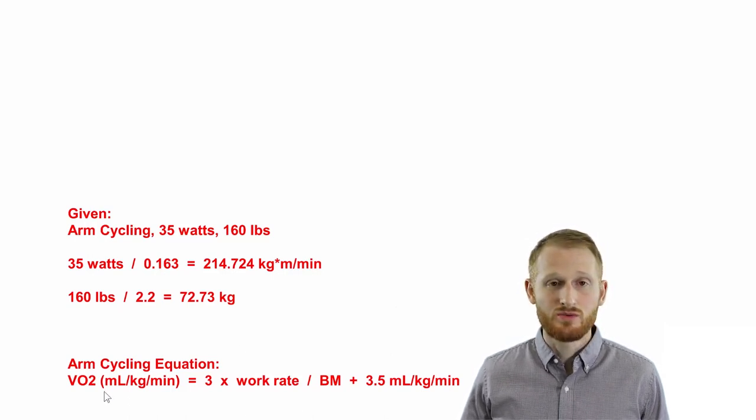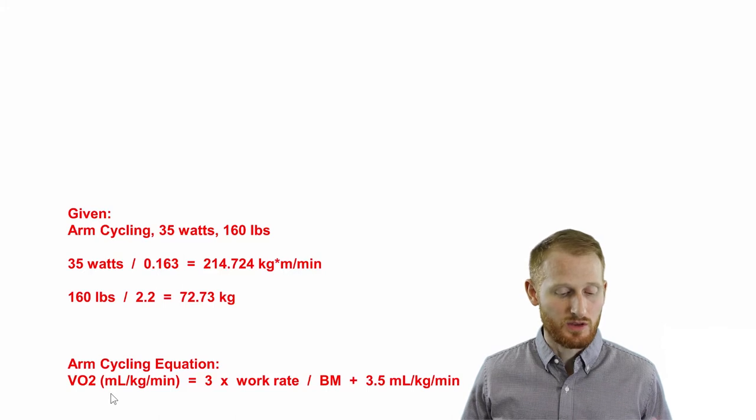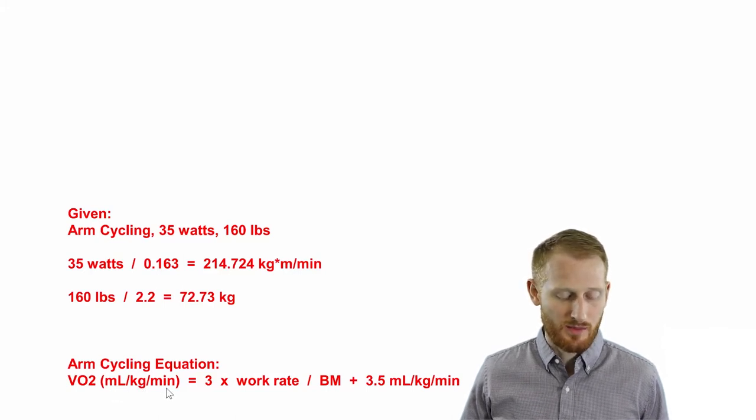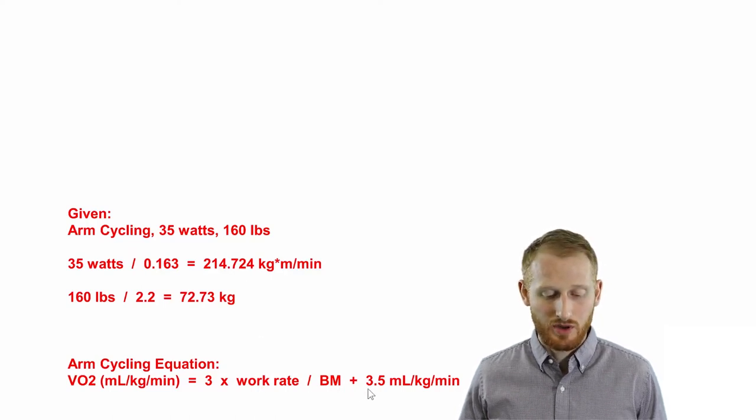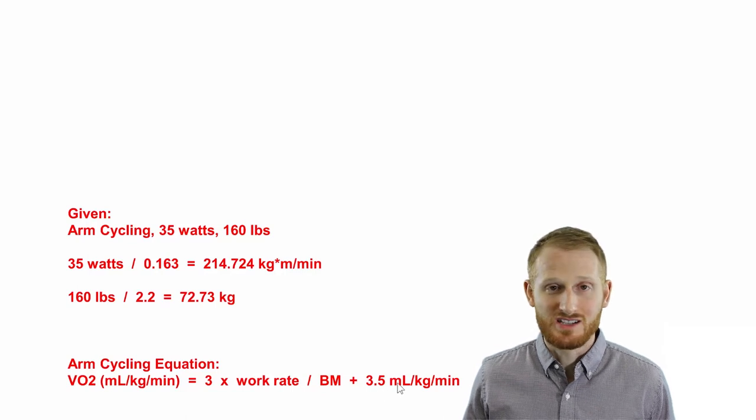So the VO2 in relative units, so that's milliliters of oxygen per kilogram body mass per minute, is equal to three times the work rate, which is this intensity, divided by the body mass plus 3.5 mL per kg per minute.